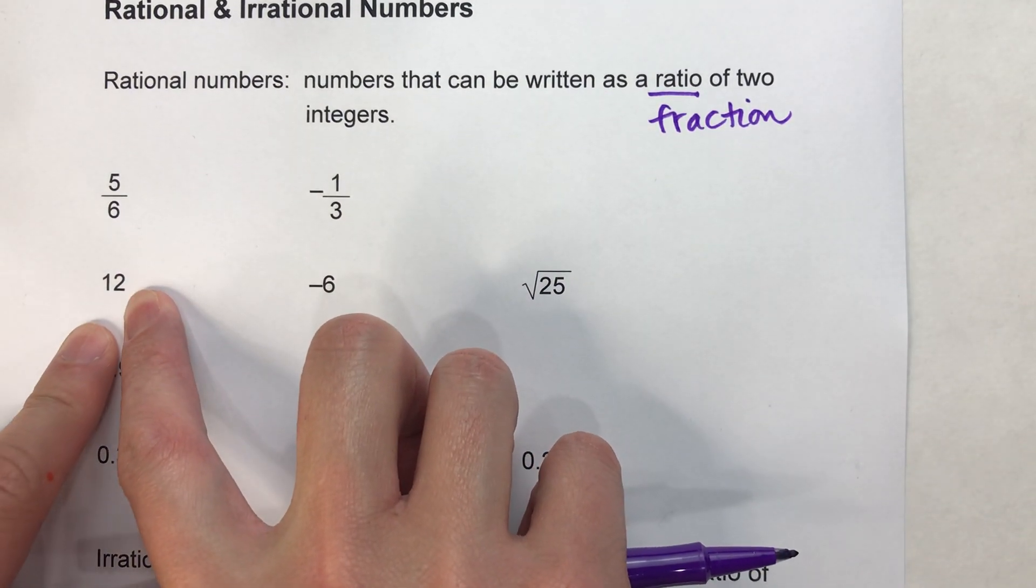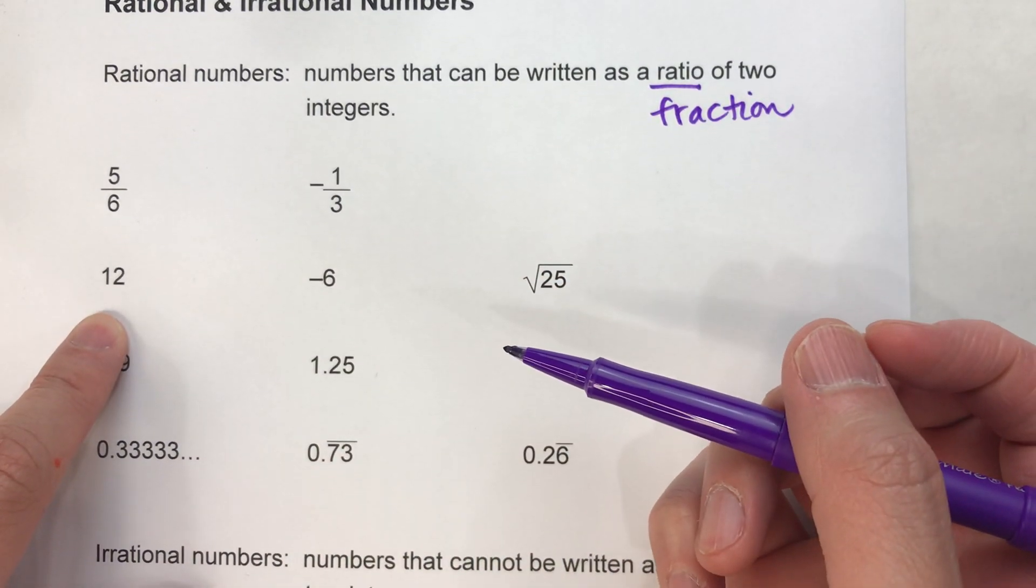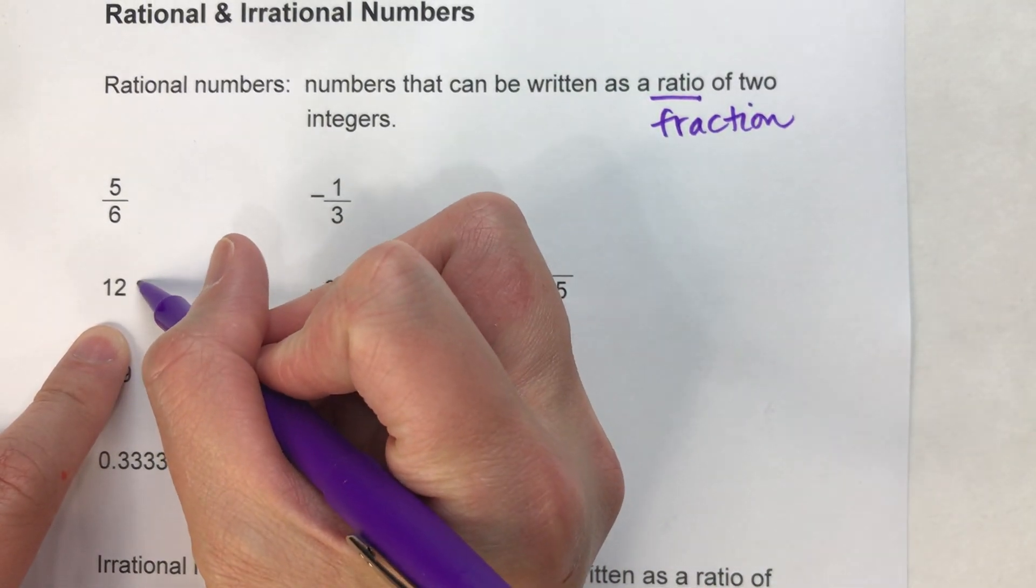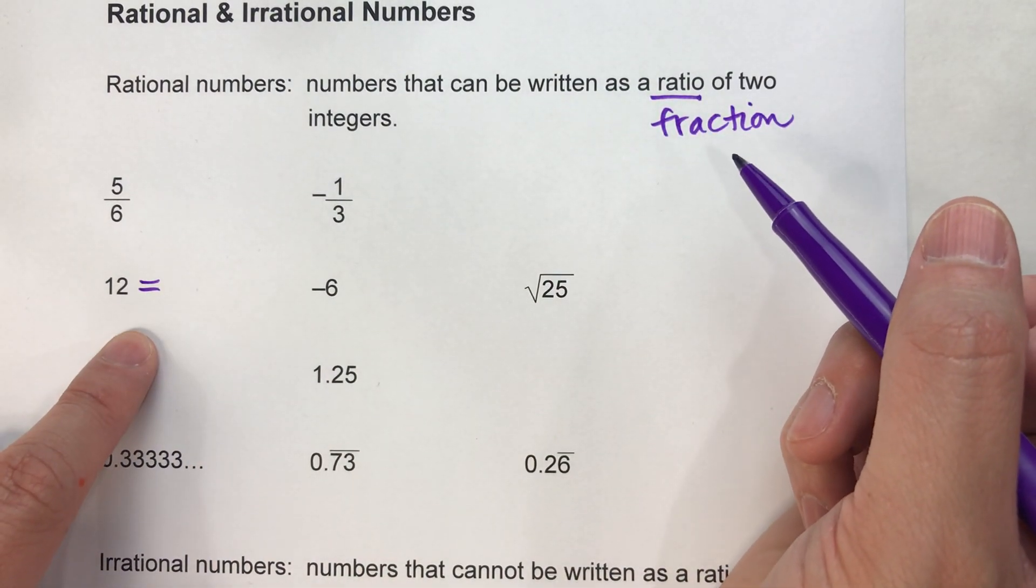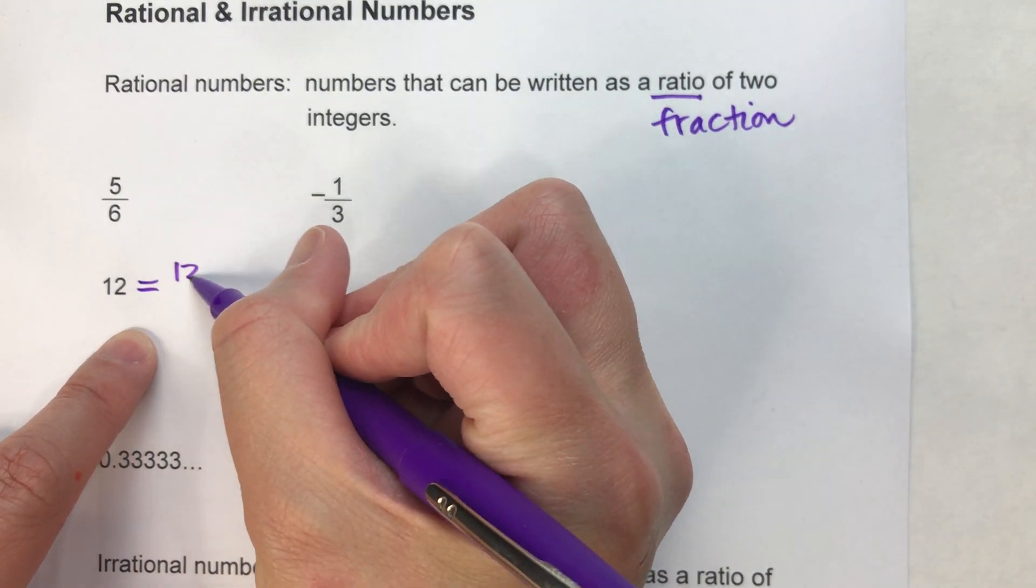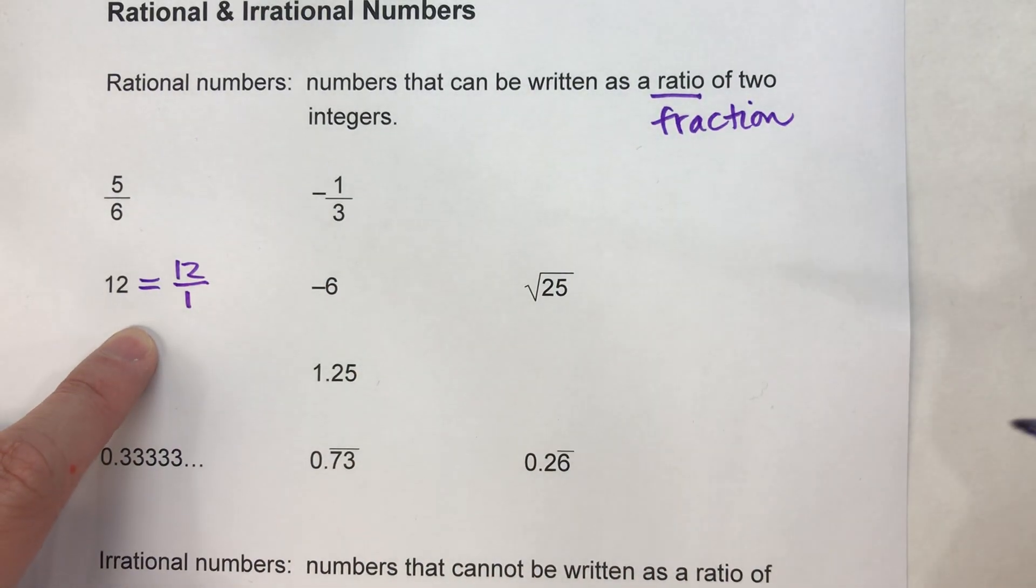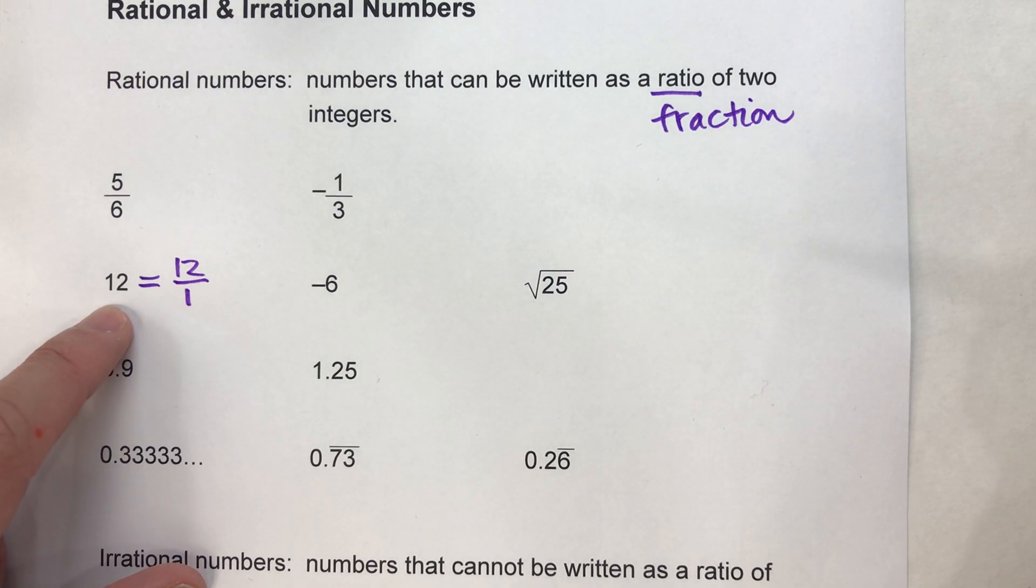Also, all whole numbers are rational, like 12. The way we know it's rational is because I could write this as a fraction if I wanted to. Any whole number you can write as the number over 1. 12 can be written as 12/1, so 12 is rational.